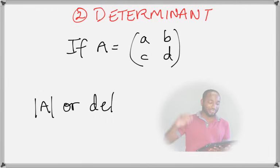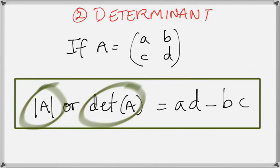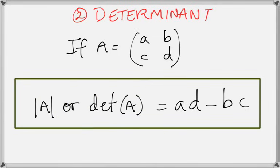For the determinant: if A equals [a b; c d], then the determinant of A equals ad minus bc. That symbol — the modulus bars — also means determinant; it's just a different way of writing it. So the determinant of A equals ad minus bc, meaning these two diagonal numbers multiplied.